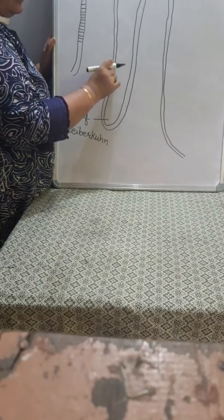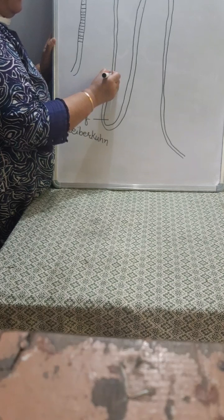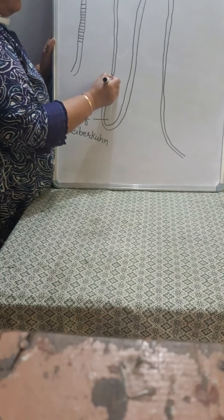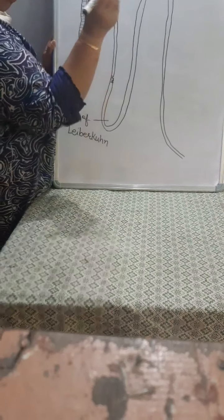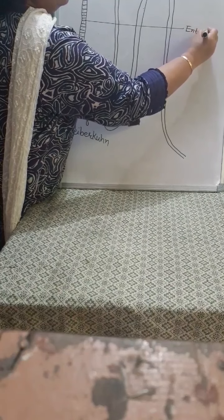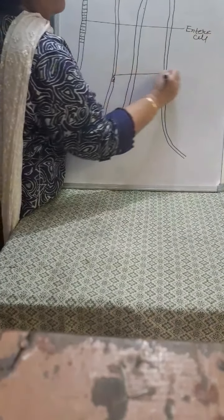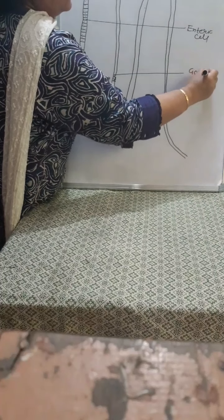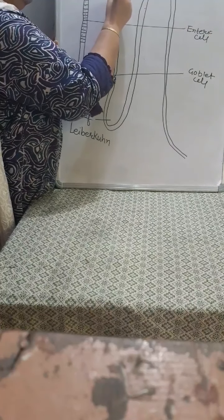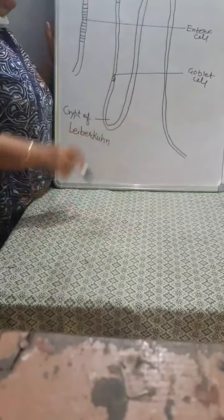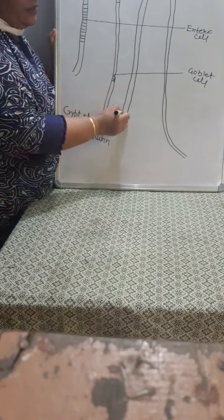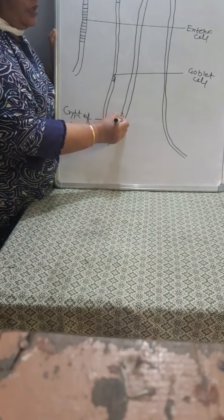Then draw some cells in which invagination of the cell membrane takes place — these are called goblet cells. These goblet cells are found in between the enteric cells all over the villi. You have to draw goblet cells in between the enteric cells throughout the villi.